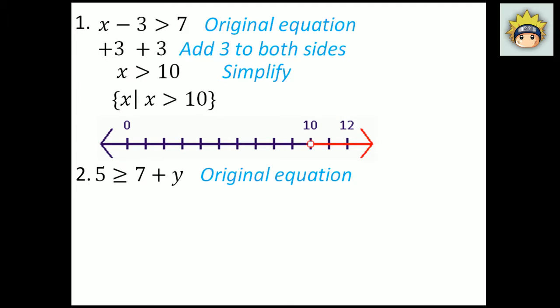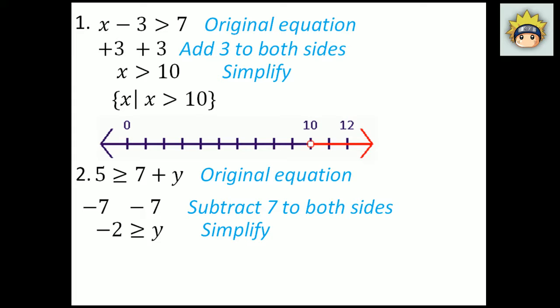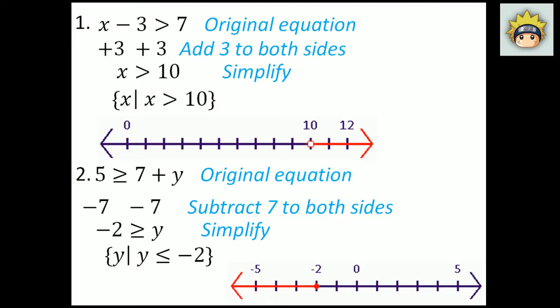Number 2. The original equation is 5 is greater than or equal to 7 plus y. The inverse property of plus 7 is subtract 7, so I subtract 7 from both sides. What I have left on the left-hand side is negative 2, and on the right-hand side is just y. So negative 2 is greater than or equal to y. In set builder notation: y, y is less than or equal to negative 2. On the number line, at negative 2 it is a closed dot because it is less than or equal to — so negative 2 is included. It moves to the left, so negative 3, negative 4, negative 5 and so forth would work.